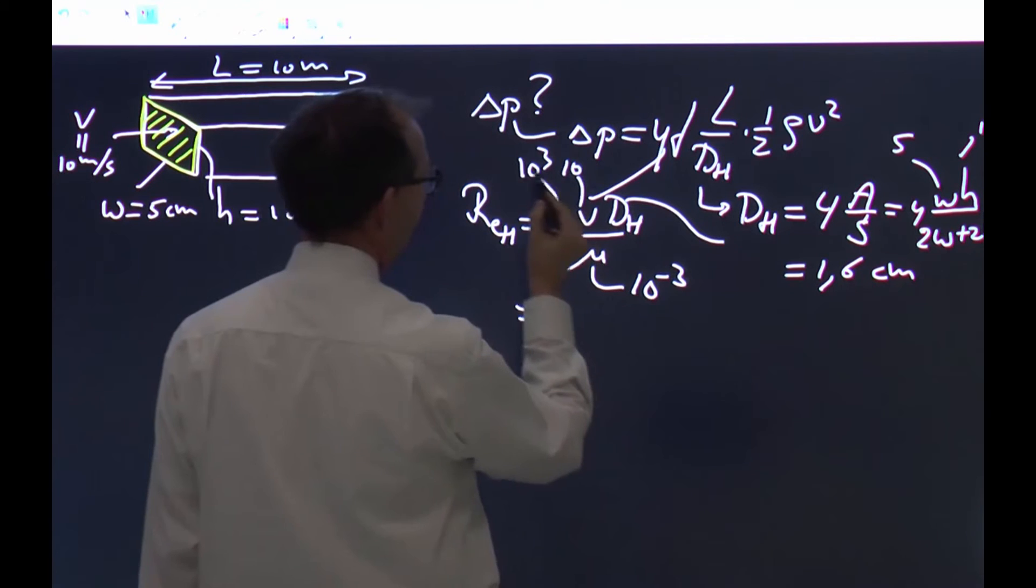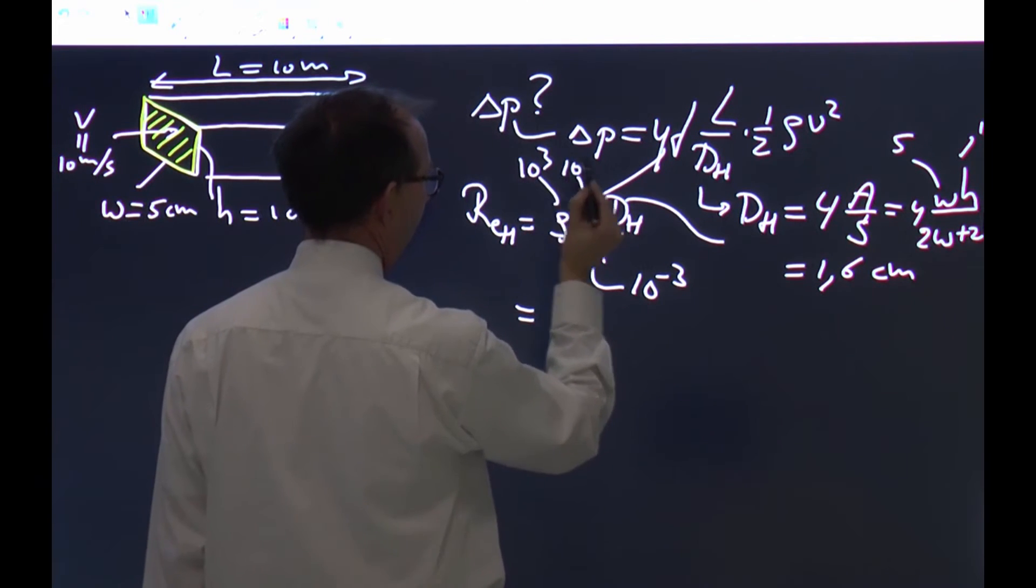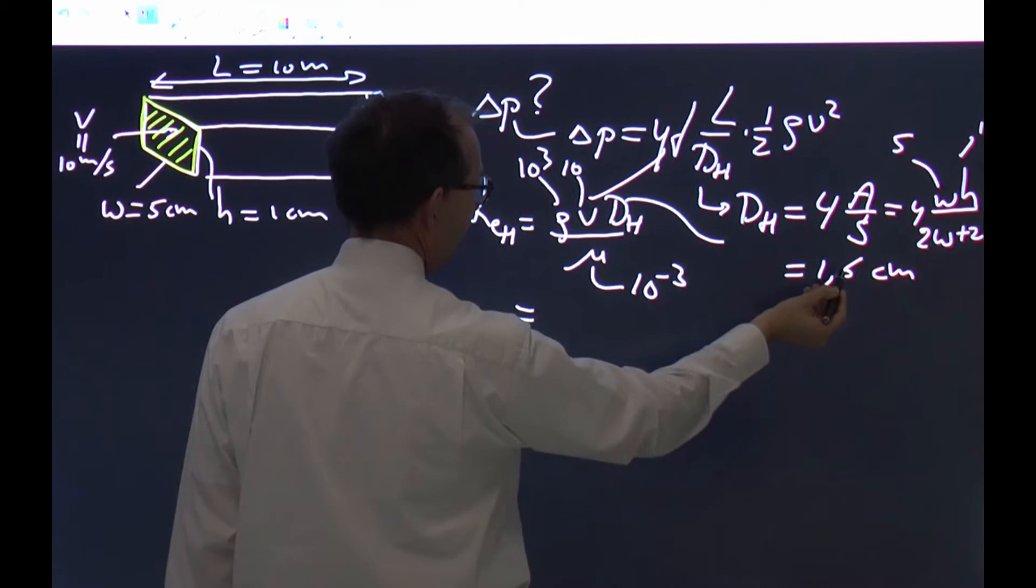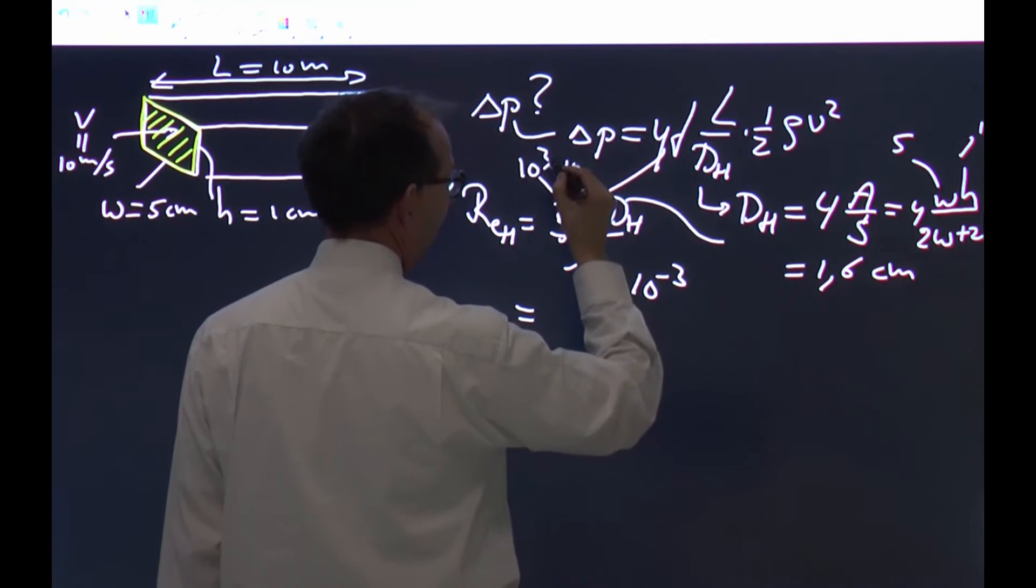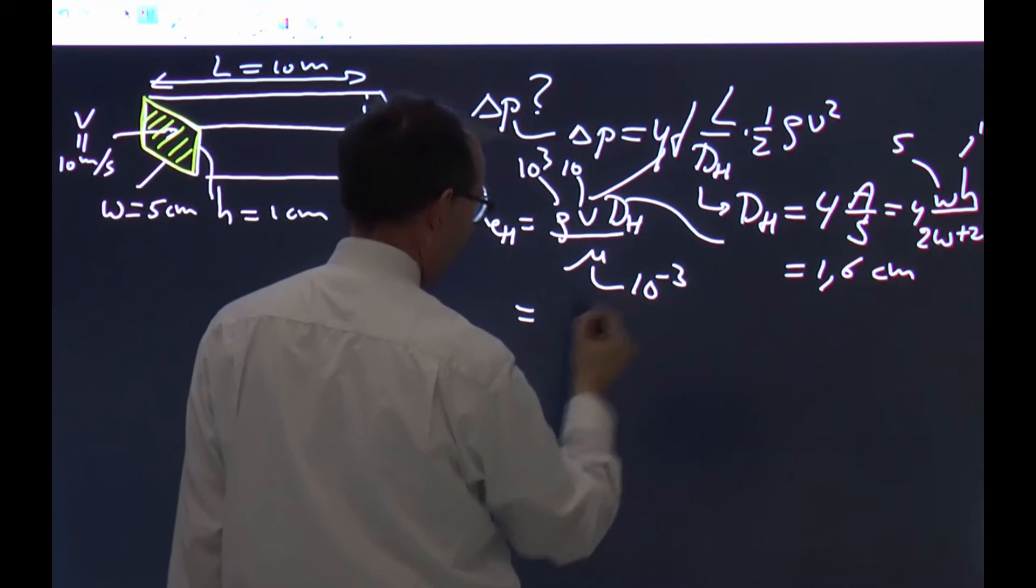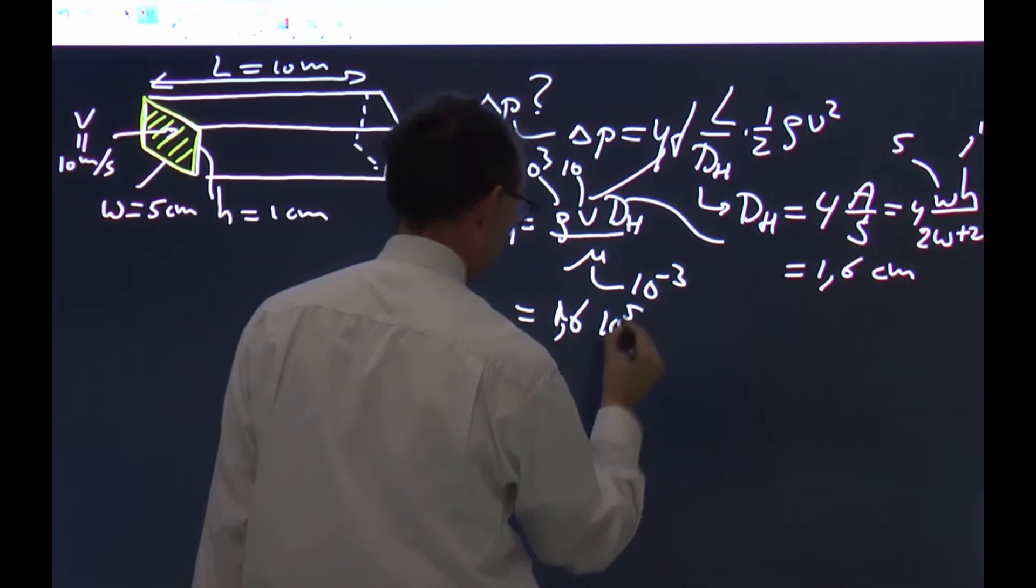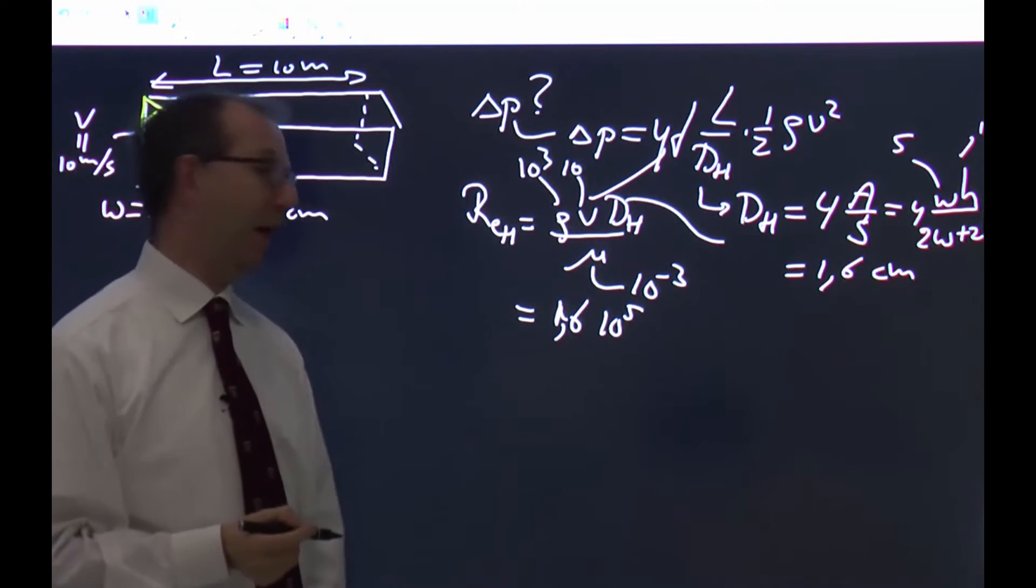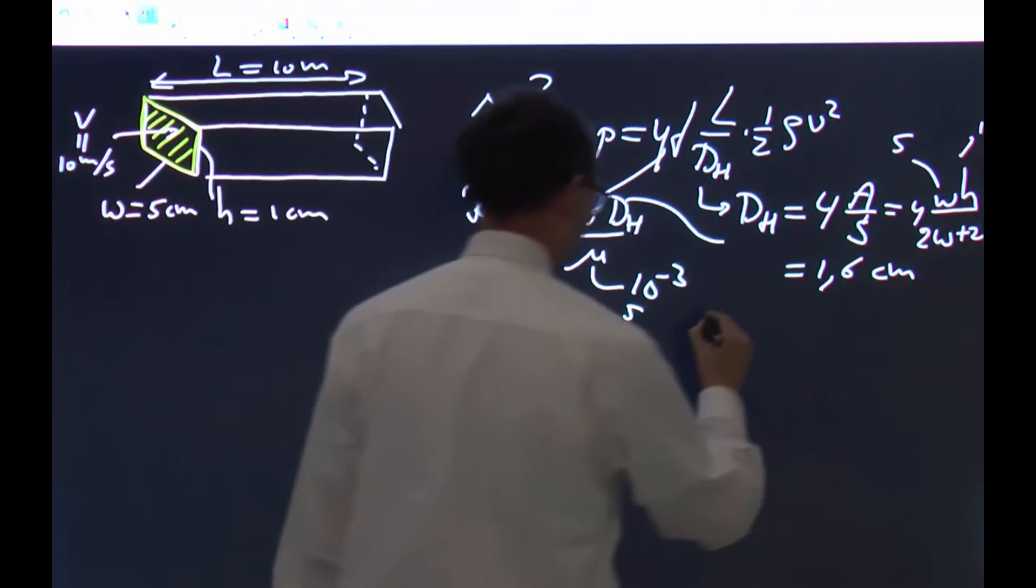10 to the minus 2 from this gives me, minus 2 is 2 and a 3 is 10 to the fifth and a 1 is 1.6 times 10 to the fifth. If you just put in the numbers, you get this one out, which means highly turbulent.